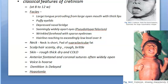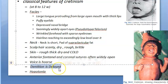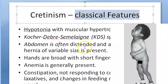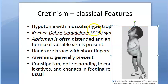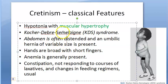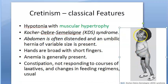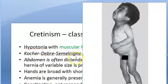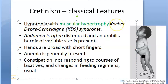Dentition is delayed, reflecting the delay in physical and mental development. There is hypotonia of the body. This hypotonia can be present alongside muscular hypertrophy — a combination known as Kocher-Debré-Sémélaigne (KDS) syndrome.